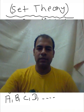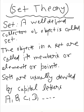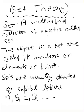So let's start. A set is a well-defined collection of objects. For example, if we say that there are numbers 1, 2, and 3, then these three numbers constitute a set. The objects in a set are called members, elements, or points.